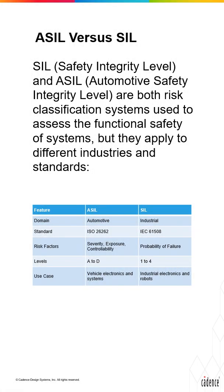Understanding ASIL and SIL is crucial for engineers working on safety-critical systems. ASIL and SIL are two key safety integrity levels used in different domains: ASIL applies to automotive systems under ISO 26262, while SIL applies to industrial systems under IEC 61508.